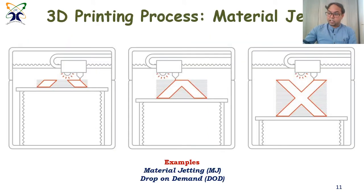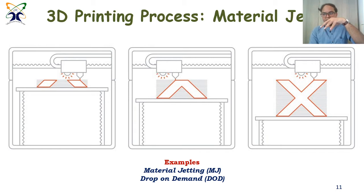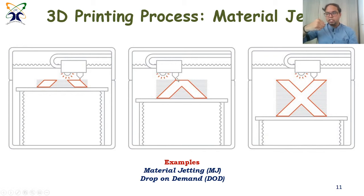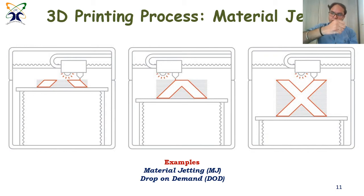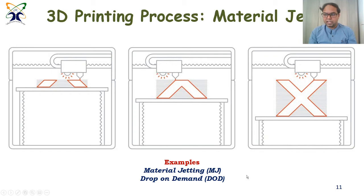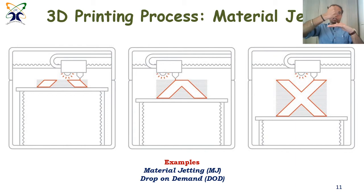Another method is material jetting, which instead of using a resin bath puts a droplet of material on its selected deposition area — similar to FDM but pouring from the outside to get the object. Drop on Demand is one example, where you can stop and start the material flow to create gaps as needed.